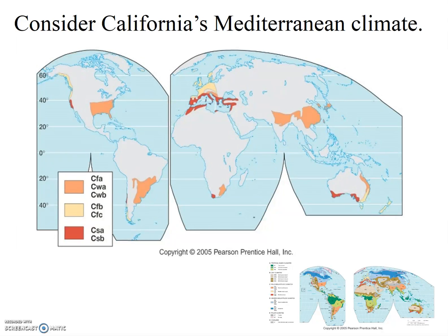In a couple of weeks, we'll continue our discussion of climate types and learn that our Mediterranean climate is fundamentally responsible for much of the food crops we think of as Californian. What crops might those be? Can you think of things we have in common with other Mediterranean climate places around the world? Stay tuned!